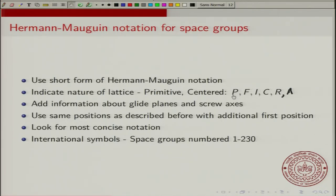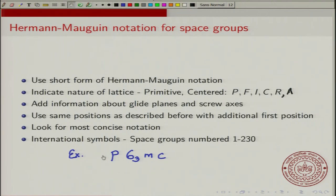To give one example: you can have something like P6₃MC. You can see that the first letter P indicates primitive. The 6₃ indicates that there is a 6₃ screw axis at the first position. Then a mirror at the second position and a C glide at the third position. We always use the most concise notation.